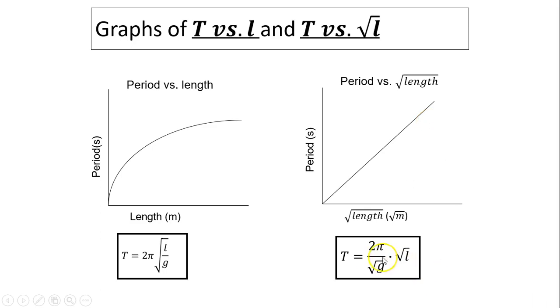In this direct relationship, the 2π divided by square root of g, the number in front of this, is the slope. Actually, we can do another experiment to determine if the value of g is 9.81.